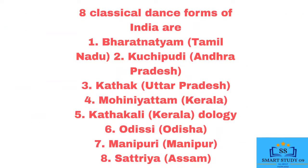The eight classical dance forms of India are: 1. Bharatnatyam – Tamil Nadu, 2. Kuchipudi – Andhra Pradesh, 3. Kathak – Uttar Pradesh, 4. Mohinyatam – Kerala, 5. Kathakali – Kerala, 6. Odissi – Odisha, 7. Manipuri – Manipur, 8. Satriya – Assam.